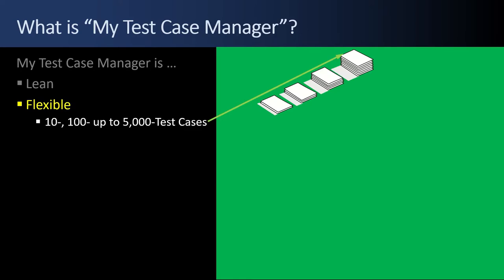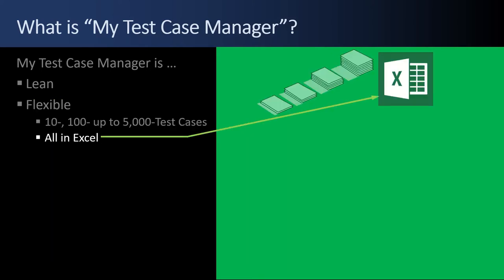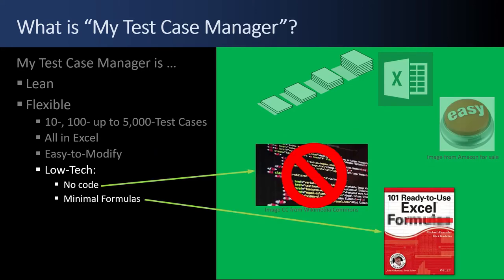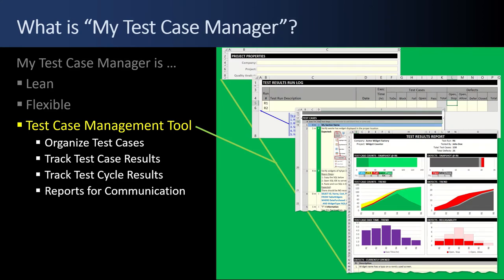MyTestCaseManager is flexible. You can have 10 test cases, 100 test cases, and if you really want to, all the way up to 5,000 test cases — though that's probably not recommended. It's all in Excel. It's easy to modify, and it's low tech. There's no code and there's minimal formulas. It's just straightforward and simple to use and simple to modify. This is a test case management tool. You use it to organize test cases, track test case results, track test cycle results, and use the reports for communication.